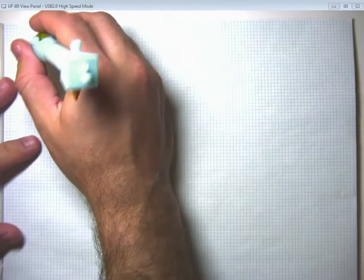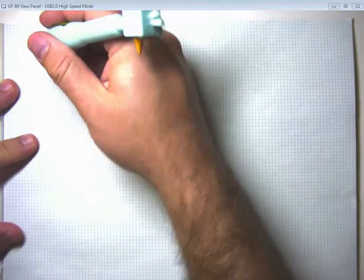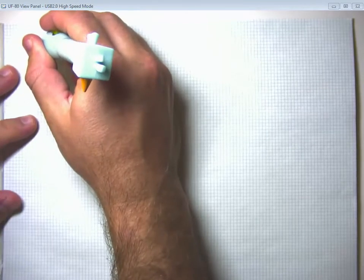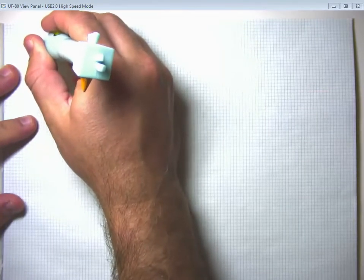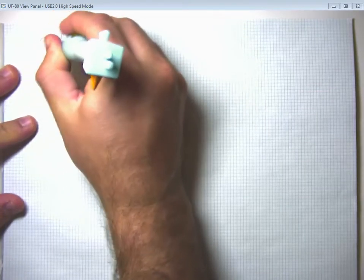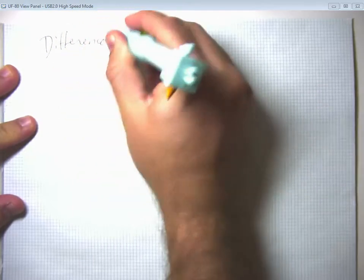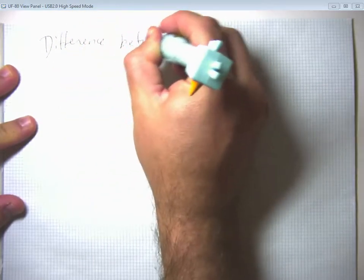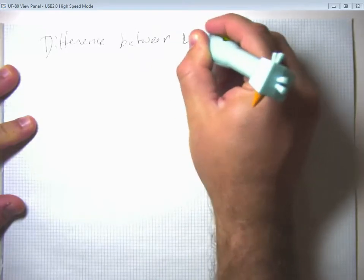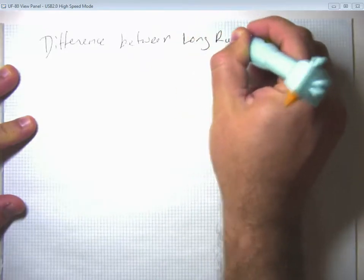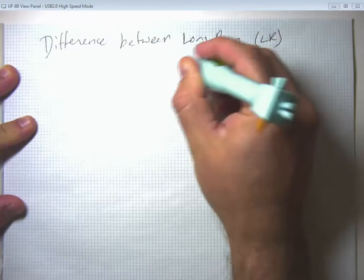So in our second part of the video segment on economic fluctuations, we're going to talk about the difference between the macroeconomy in the long run and the short run.